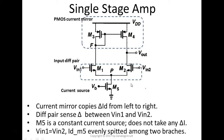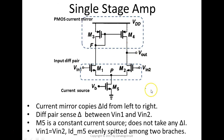When Vin1 equals Vin2, everything is balanced. The current going into M5 is evenly split between the left branch and the right branch. Also, the quiescent voltage for Vout is equal to the quiescent voltage at node F.